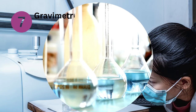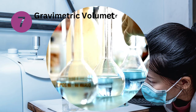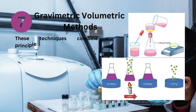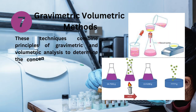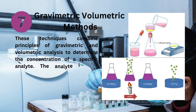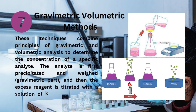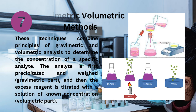Gravimetric volumetric methods: These techniques combine principles of gravimetric and volumetric analysis to determine the concentration of a specific analyte. The analyte is first precipitated and weighed (gravimetric part), and then the excess reagent is titrated with a solution of known concentration (volumetric part).